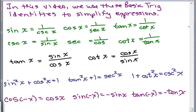These are the basic trig identities we might need to use. We've got the reciprocal identities, tangent and cotangent in terms of sine and cosine, the three Pythagorean identities, and the even and odd identities.